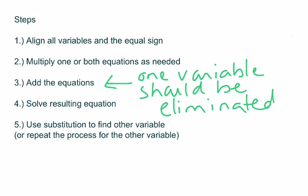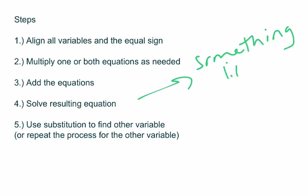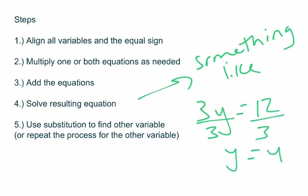You add them together and one of the variables will drop out, which leaves you with just one variable. That brings us to step four: solve the resulting equation. The resulting equation, if you've done it right, would look something like three Y equals twelve. You would just solve that and get Y equals four. That's what we mean by solve the resulting equation.